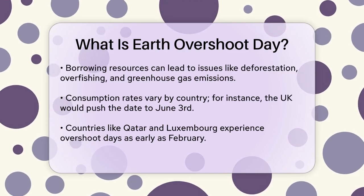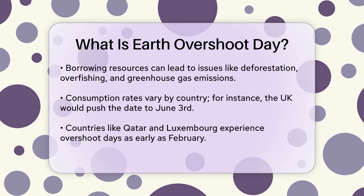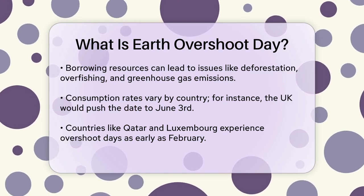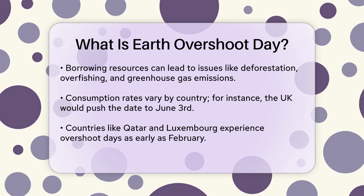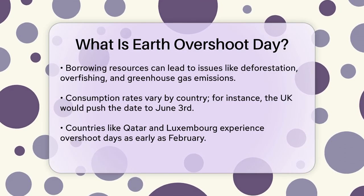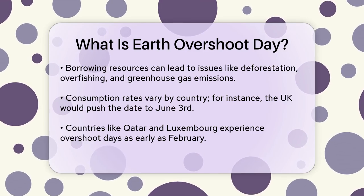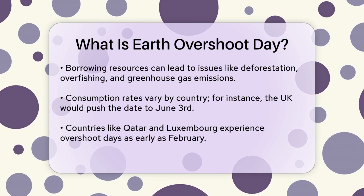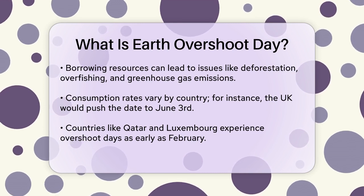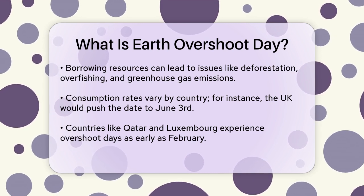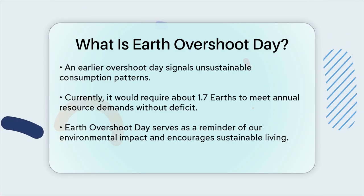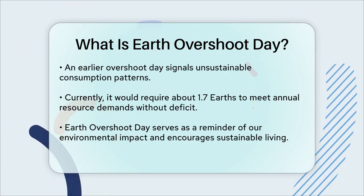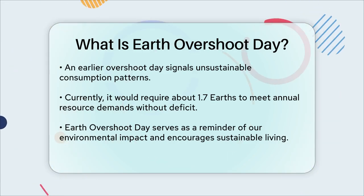To put it into perspective, if everyone consumed resources at the same rate as some countries do, the date would vary significantly. For example, if the whole world consumed like the UK, the overshoot day would be around June 3rd. In contrast, countries like Qatar and Luxembourg hit their overshoot days as early as February. The earlier Earth Overshoot Day occurs, the more it indicates that our consumption patterns are unsustainable.